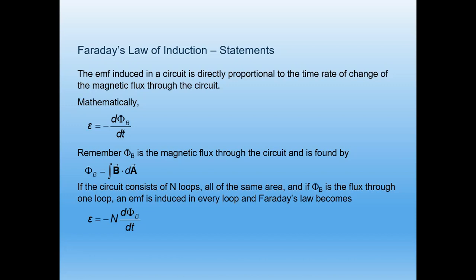Φ_B is the magnetic flux through the circuit, found by Φ_B = ∮ B · dA. Where the circuit consists of N loops all of the same area with flux Φ_B through one loop, the total induced EMF is ε = −N dΦ_B/dt. The common point of all observations is that the time rate of change of magnetic flux through the circuit induces EMF in it — this is Faraday's law of electromagnetic induction.